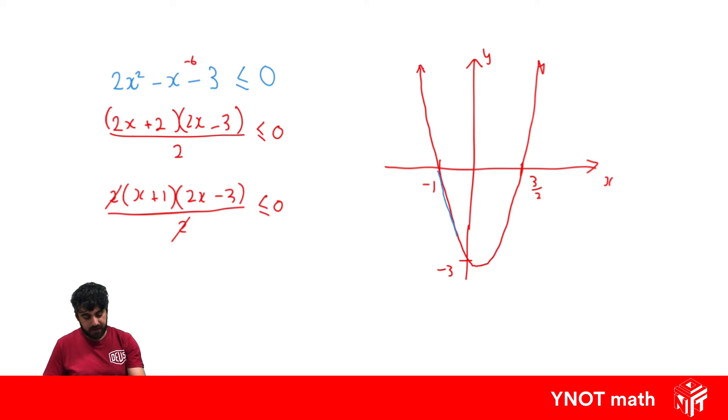It's below the x-axis all values there, so now we know that our solution is going to be when x is between minus 1 and 3 on 2. This time we write equal to because the original inequality allowed it to be equal to 0 as well.